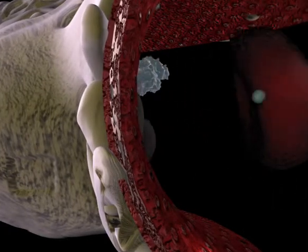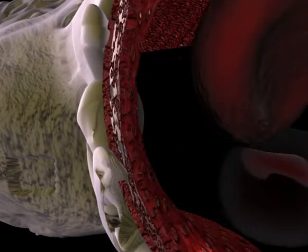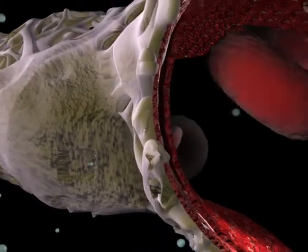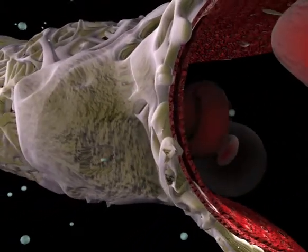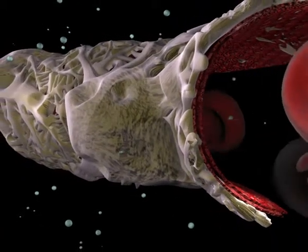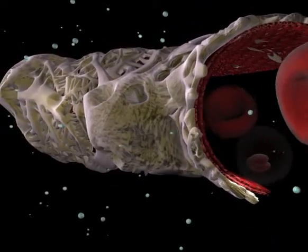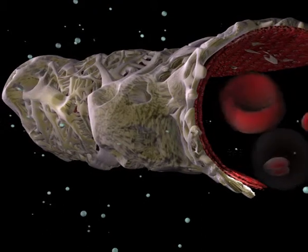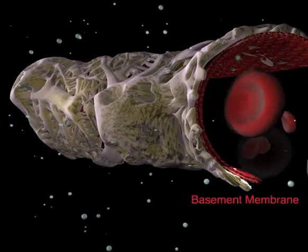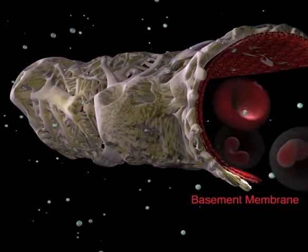It is a rare renal disease that, left untreated, leads to the progressive deterioration of the glomerular filtration barrier. It has been determined that anti-GBM disease originates within the basement membrane of the glomerulus.